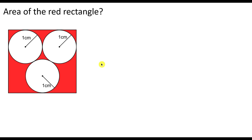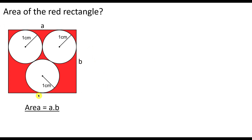So the area of the rectangle is the multiplication between each one of its sides. So let's call this side A and this side B. The area of the red rectangle will be A times B, so we need to find A and we need to find B.